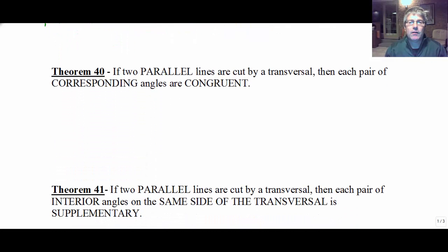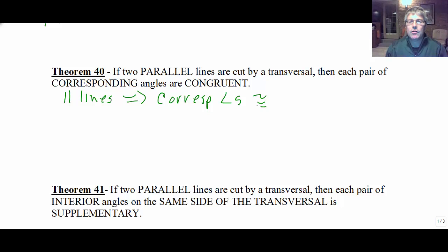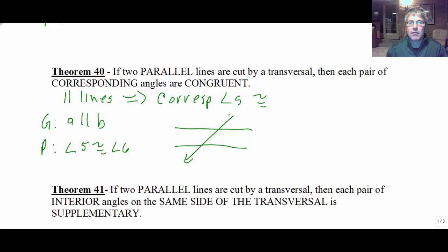The next theorem: if two parallel lines are cut by a transversal, then each pair of corresponding angles are congruent. Again, this is the converse of what we saw in the previous section — parallel lines imply corresponding angles congruent. We must have established that the lines are parallel. So if line A is parallel to line B, and we prove angle 5 congruent to angle 6, we have line A parallel to line B, and any pair of corresponding angles will be congruent — so 5 is congruent to 6.